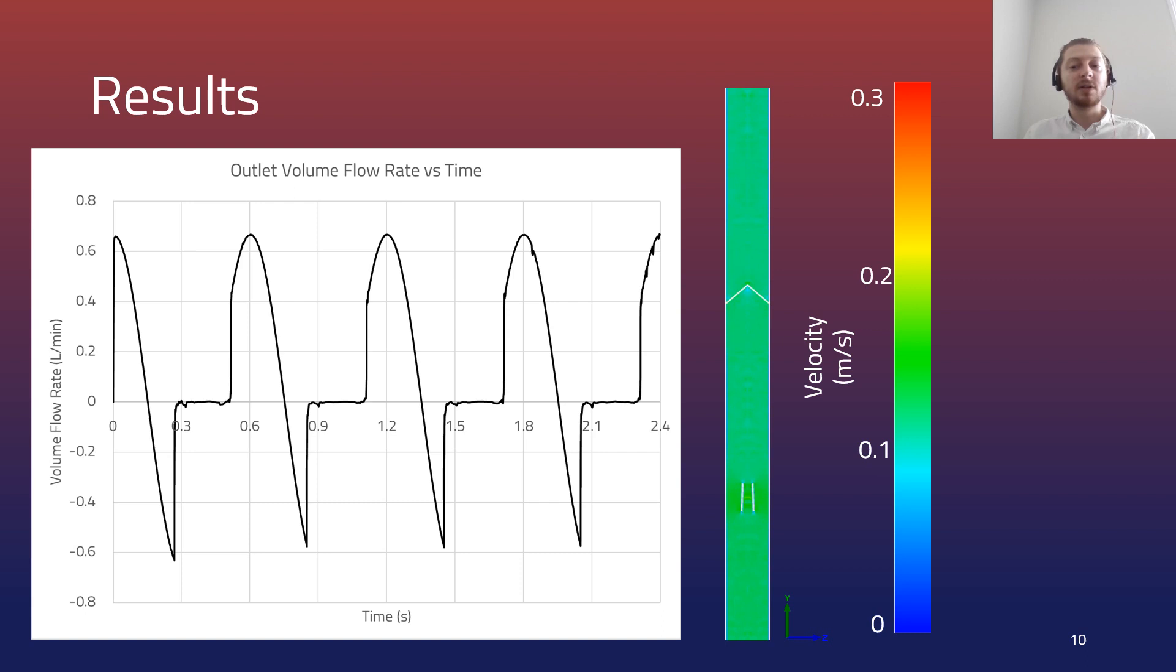Here are some of the results from this model at a stroke rate of 100 beats per minute and a stroke length of 25 millimeters. The model was run for four cycles for a total time of 2.4 seconds. What can be seen here is that fluid is pushed through the domain when the atrioventricular valve moves downwards, shown as positive flow rate on the graph.